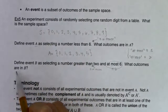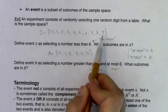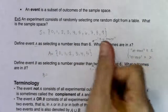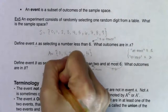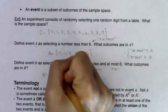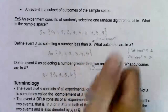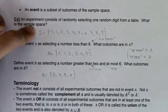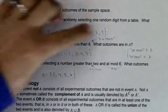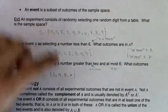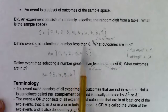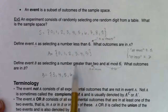So we have our sample space — all possible single-digit numbers — and some of these will be in event A and some in event B. To get into A you need to be less than six, or equivalently five or fewer. To be in event B, you need to be greater than two and at most six.